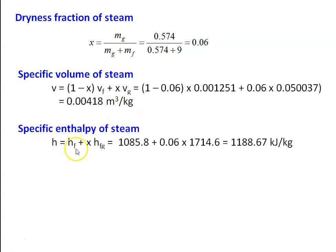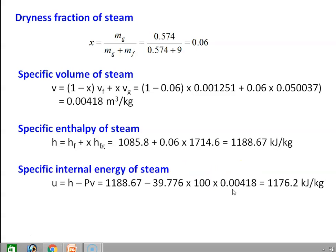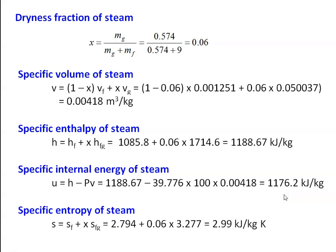Specific enthalpy H = Hf + x·Hfg = 1085.8 + 0.06×1714.6 = 1188.67 kJ/kg. Specific internal energy U = H − P·V = 1188.67 − 39.776×100×0.00418 = 1176.2 kJ/kg. Specific entropy S = Sf + x·Sfg = 2.794 + 0.06×3.277 = 2.99 kJ/kg·K.